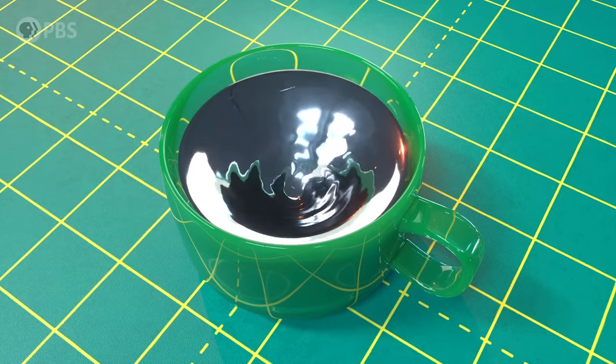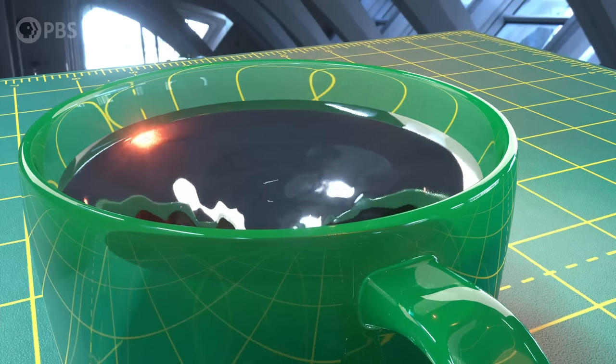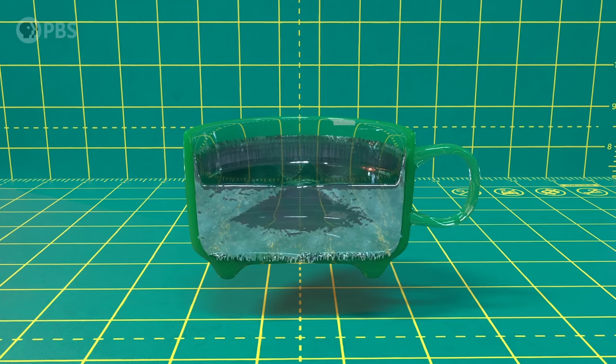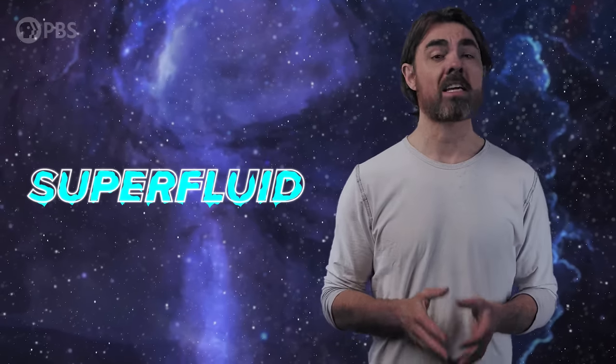Even unstirred, this fluid will climb the walls of the cup by itself and even leak through the microscopic channels in the water-type porcelain. The fluid in question is liquid helium cooled to near absolute zero when it becomes an exotic state of matter known as a superfluid.